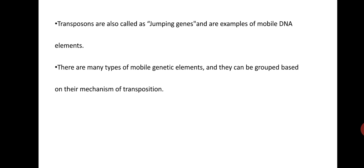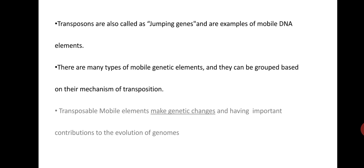Transposons are also called jumping genes, junk DNA, or mobile DNA elements. There are many types of mobile genetic elements grouped based on their mechanism of transposition. Transposable mobile elements make genetic changes and have an important contribution to the evolution of genomes, contributing to the evolutionary mechanism by causing mutations or altering gene sequences.